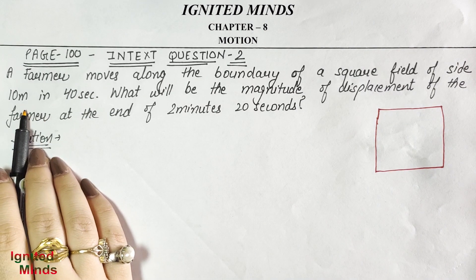What is the farmer doing? The farmer moves along the boundary of a square field of side 10 meters in 40 seconds. That means the whole boundary — if the farmer starts from A, goes to B, C, D, and back to A — it covers one complete round in 40 seconds.